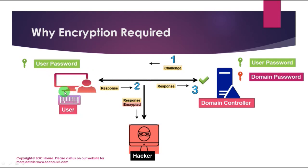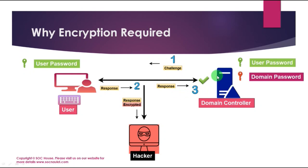The user sends a request to access resources. The domain controller sends a challenge to the user. The user encrypts the challenge with their password hash and sends it back to the server. The server uses the user password for decryption and finds that the challenge and response match the user password stored in Active Directory. Active Directory decrypts the challenge, verifies the response, and if they match, allows the user to log in — without transferring any credentials over the network.